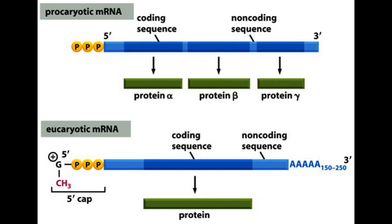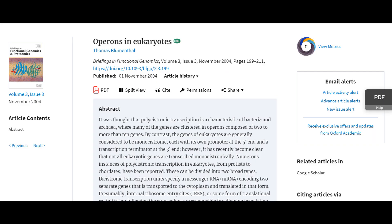Most genes in prokaryotes are in operons, but sometimes a promoter only controls one gene, which is called monocistronic. Monocistronic genes are much more common in eukaryotes. Operons, or polycistronic genes, were thought to be completely absent in eukaryotes, but a few eukaryotic operons have been described.